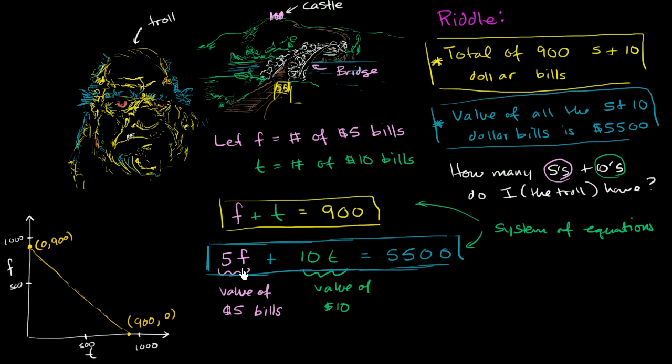This one right over here. So let's do the same thing. In this constraint, what happens if we have no tens? If tens are 0, then we have 5f is equal to 5,500. Let me do a little table here because this is a little bit more involved.